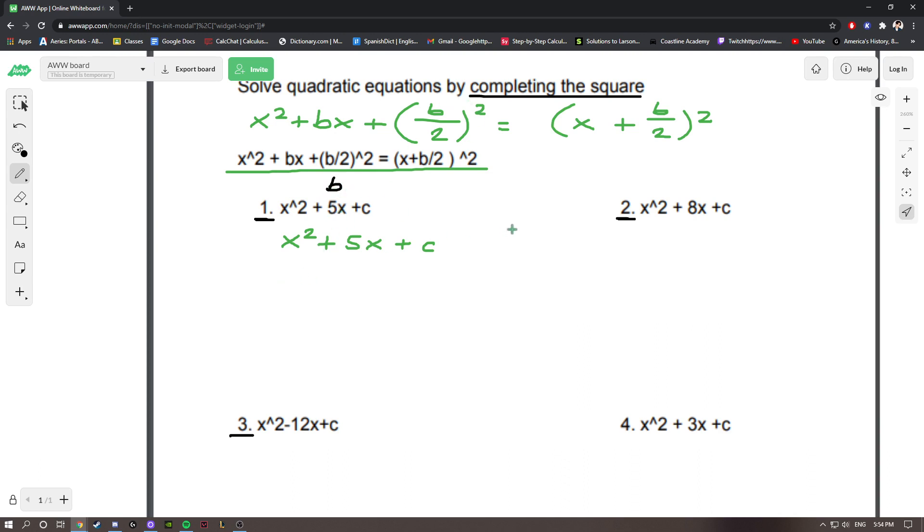So, if we do this off to the side, we could do 5 divided by 2, that squared. If you look at what I'm using right here for reference, that's going to be 25 over 4. So, x squared plus 5x plus 25 over 4. And you could write c is equal to 25 over 4.